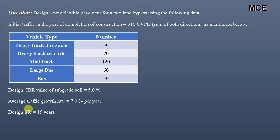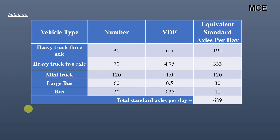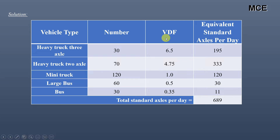First, we will find the equivalent standard axles of the road. We have the vehicle type and the vehicle number. For Heavy Truck 3 Axle, the vehicle damage factor (VDF) is 6.5. Multiply the number of vehicles by VDF: 30 × 6.5 = 195 equivalent standard axles per day for this vehicle type.